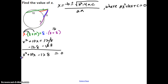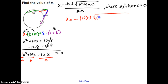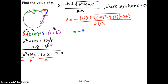Now assign A, B, and C: A is the coefficient of X squared, which is 1; B is the coefficient of X, which is positive 10; C is the constant, negative 128. Plugging into the formula: X equals negative 10 plus or minus the square root of 10 squared minus 4 times 1 times negative 128, all over 2 times 1. Simplifying: negative 10 plus or minus the square root of 100 plus 512 equals 612, all over 2. The square root of 612 is approximately 24.7.